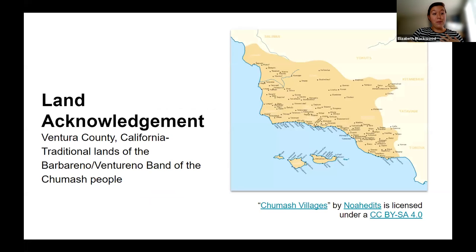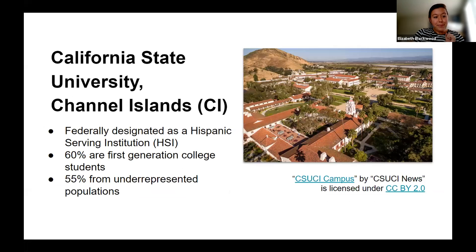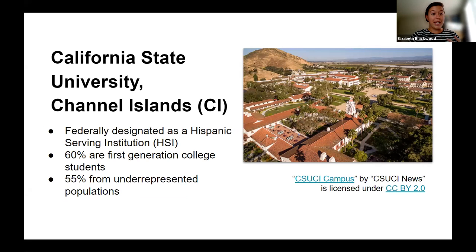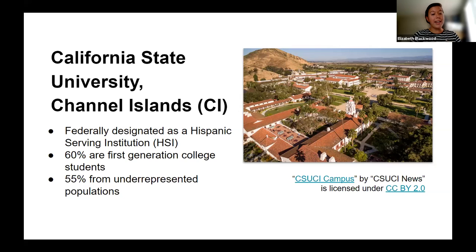I want to acknowledge that I'm speaking from the unceded traditional territory and homeland of the Barbareño Ventureño Band of the Chumash people, past and present. I'm a librarian at California State University Channel Islands, which is the newest CSU campus of the 23 campuses in our system. Throughout this presentation I'll be abbreviating it as CI.